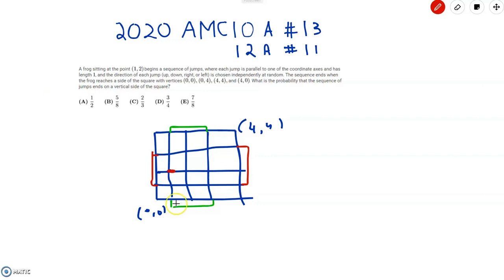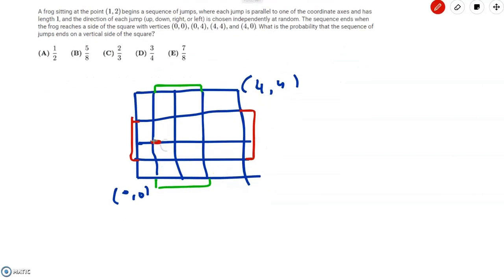So before jumping into anything, let's just simulate what the frog can do. The frog wants to get to one of these red vertical segments, and he's going to stop with probability zero if he gets to any of the green segments. So we don't want him to get to a green segment.